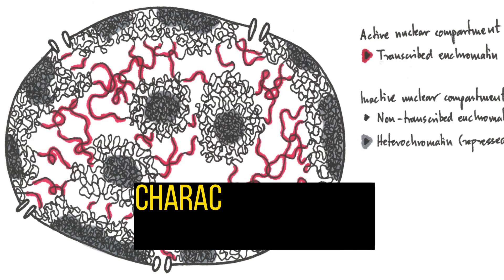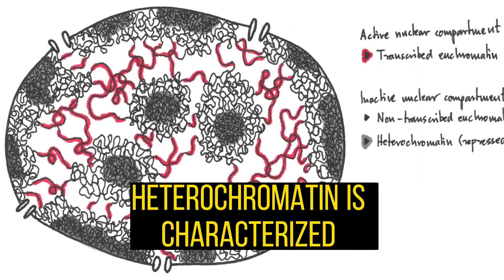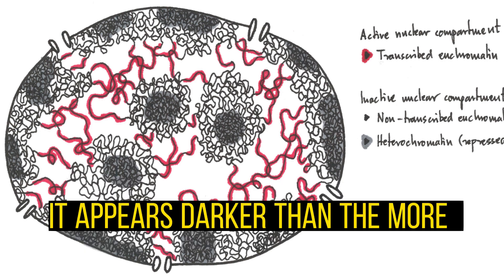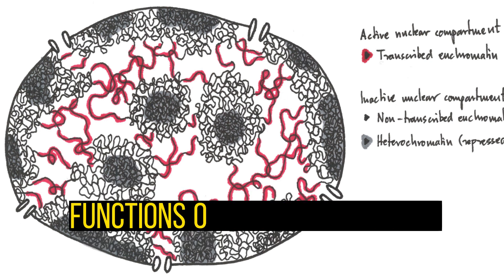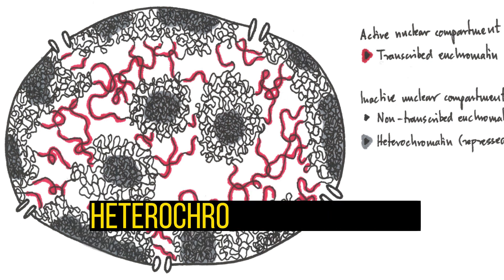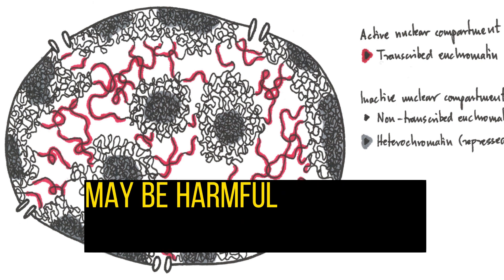Heterochromatin is characterized by its dense staining properties. It appears darker than the more loosely packed euchromatin when stained with certain dyes.